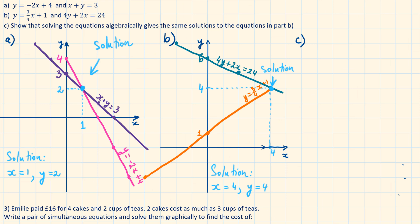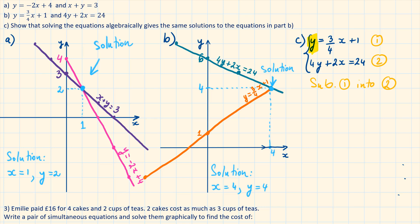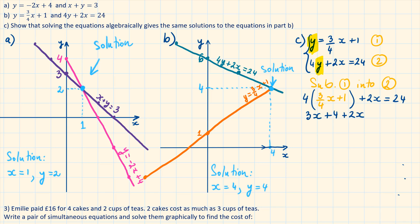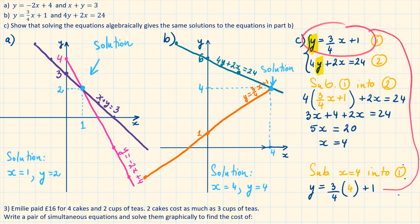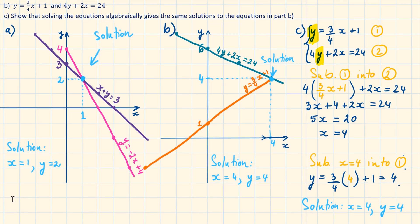Part c: Show that solving the equations algebraically gives the same solution as in part b. Since equation 1 already has y as the subject, we substitute equation 1 into equation 2, replacing y with three-quarters x plus 1. Simplifying gives x equals 4. For the complete solution, substitute x equals 4 into equation 1: y equals three-quarters times 4 plus 1, giving y equals 4 as well. Just as expected.